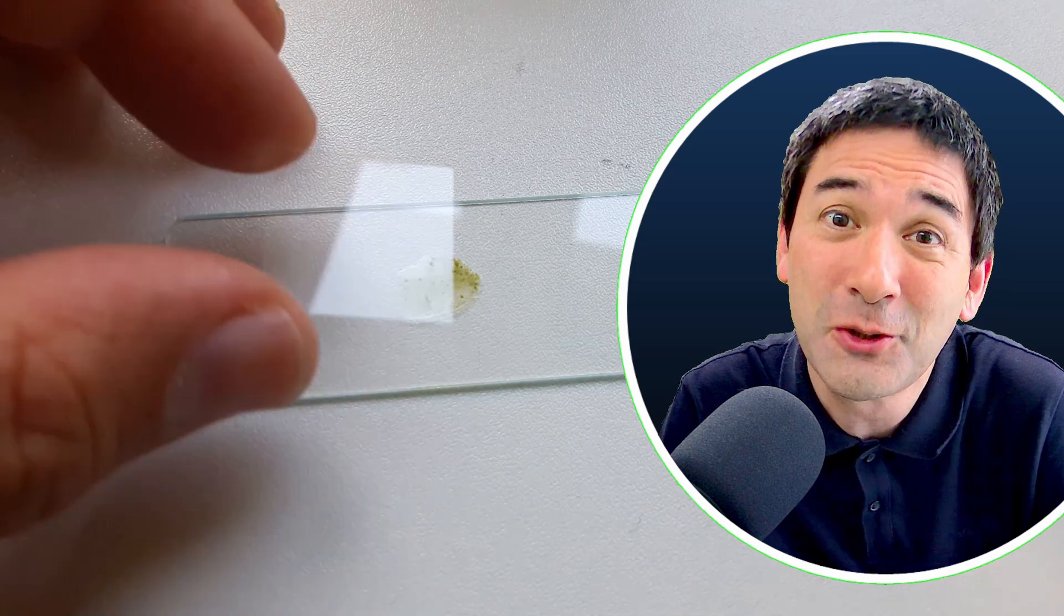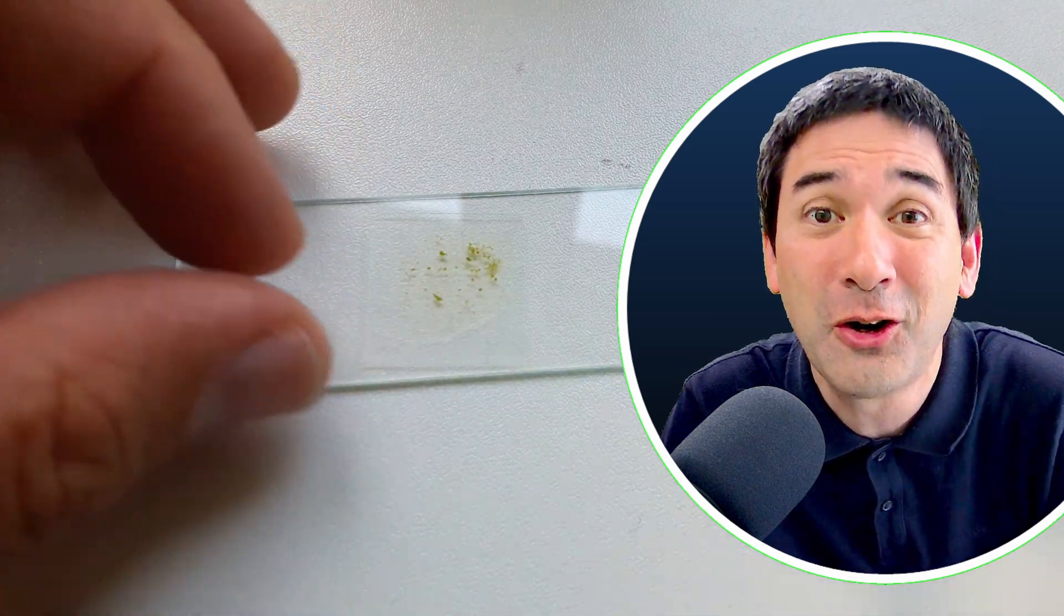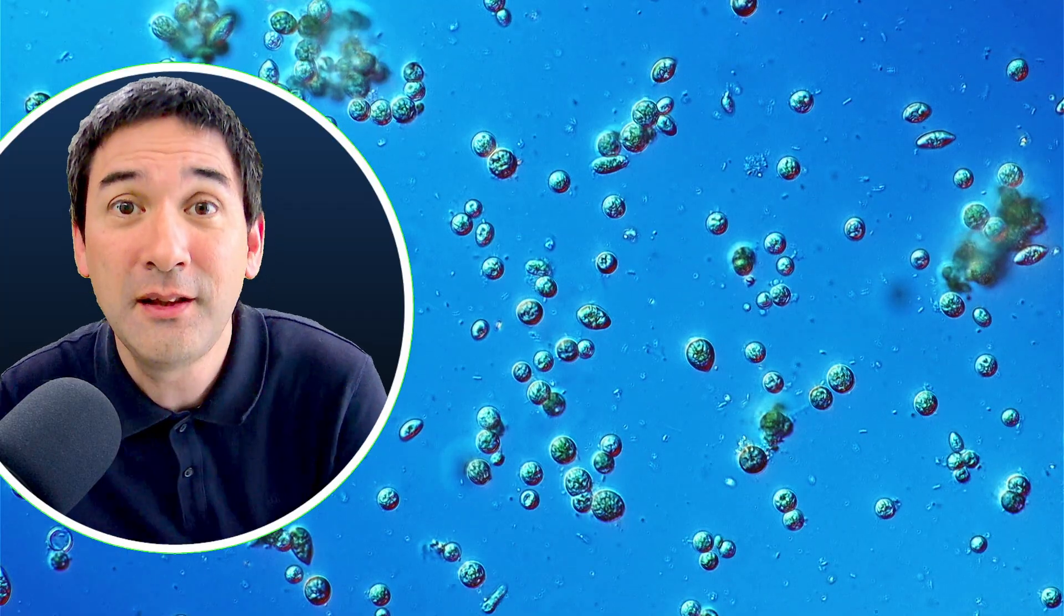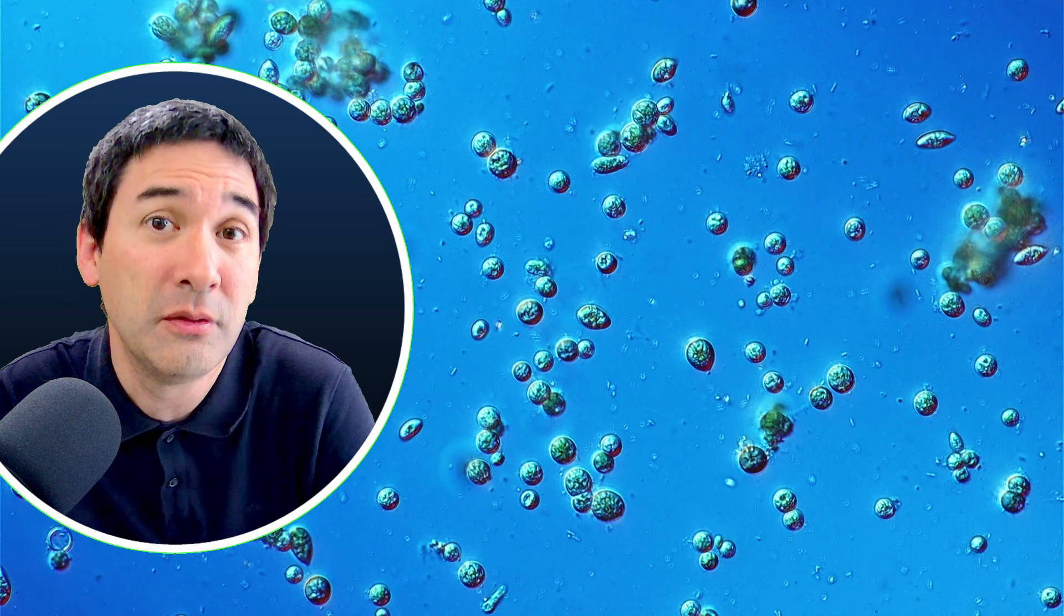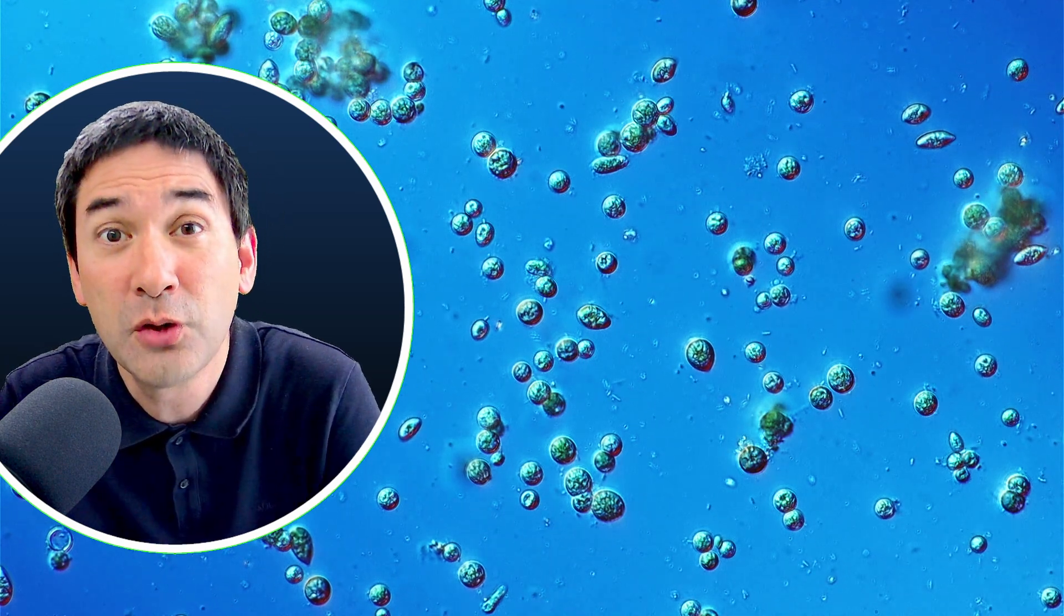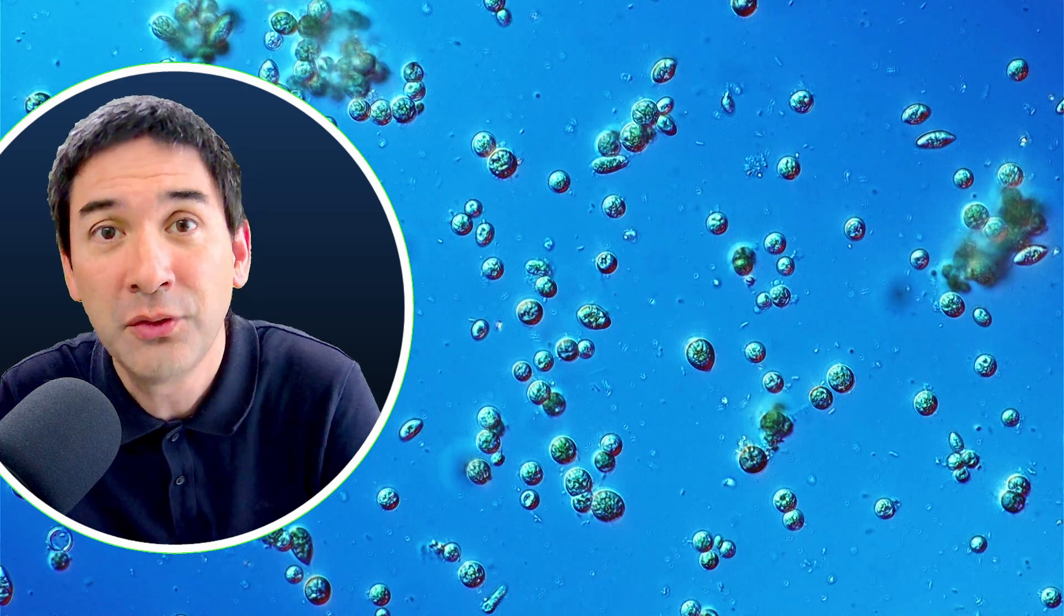But unfortunately, I'm afraid it's not going to work and I would like to explain why I think that the challenges here are a little bit too high. Well, under the microscope, we can see that the algae in this case are round little structures, cells. You can also see a couple of diatoms moving around. They're also algae.